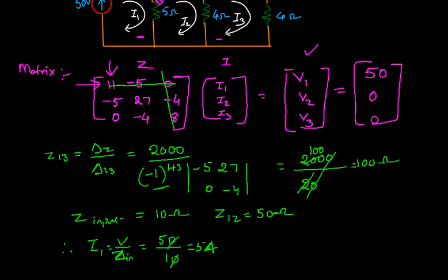If I want to find out i2, then that is voltage divided by z12, so that is equals to 50 by 50, that is equals to 1 ampere.